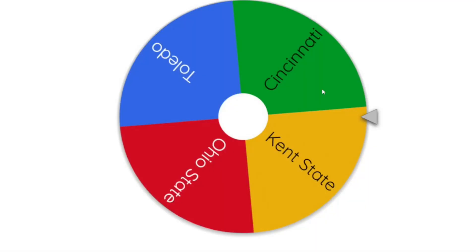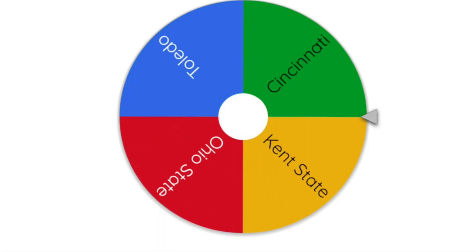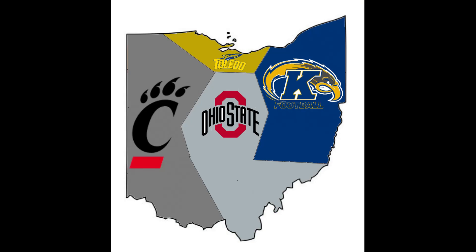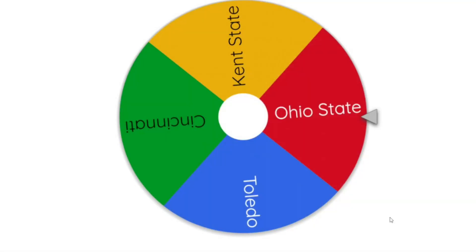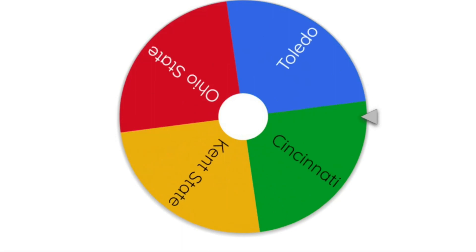Toledo is up for the first time — let's see where they're headed. No shocker, they're going into Ohio State, and they're going to get knocked off once again. Ohio State back to back to back, just taking out the competition. Nobody can manage to knock them off.